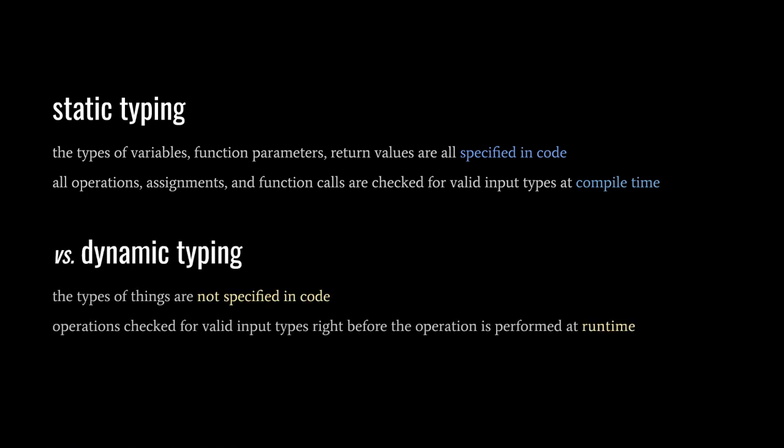Programming languages that aren't statically typed are said to be dynamically typed. In a dynamically typed language, we don't specify the types of things, and so the compiler cannot check for improper values in operations, assignments, or function calls. Only at runtime, when operations are executed, does a language check the types of the inputs. For example, a division operation with inputs that are not both numbers will trigger a runtime error that aborts the program. Performing these operation type checks at runtime not only incurs extra runtime performance costs, it means that our simple mistakes are not caught by the language until they actually happen when the code runs.